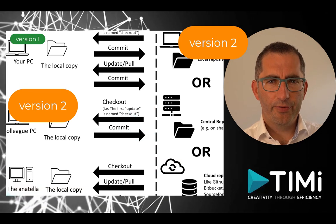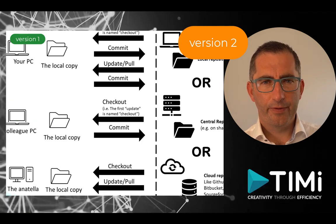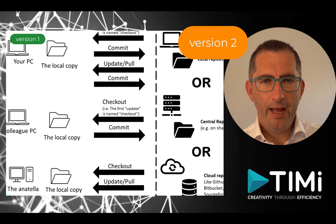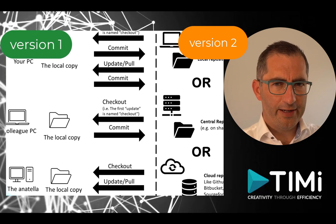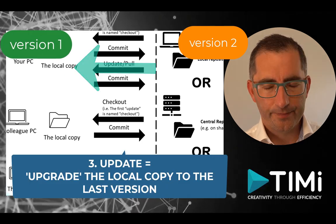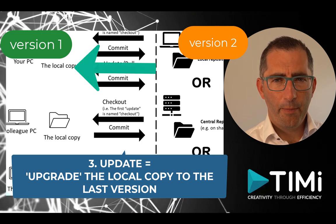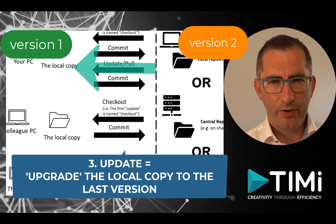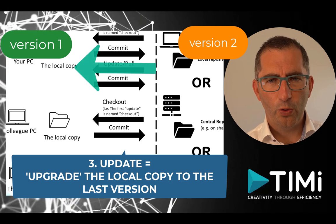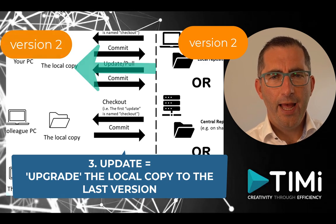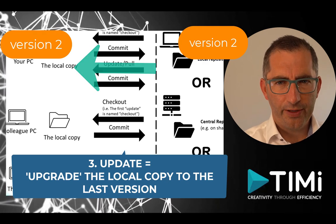At that moment, for that file, the last version in the repository is no longer the same as the one on the first laptop for the data scientist. The data scientist can update the local copy by requesting an update. Basically, the update will look at the local copy and at the repository, compare which files need to be updated, and update those files.